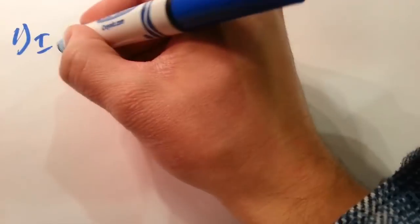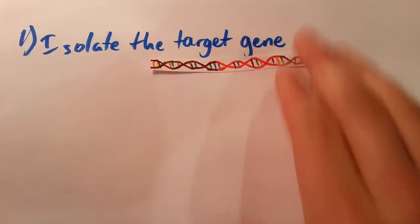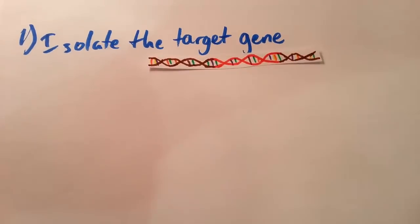So to sum up here folks, our first step is to isolate our target gene. And in our case, it was this gene here in red which actually coded for making human insulin.